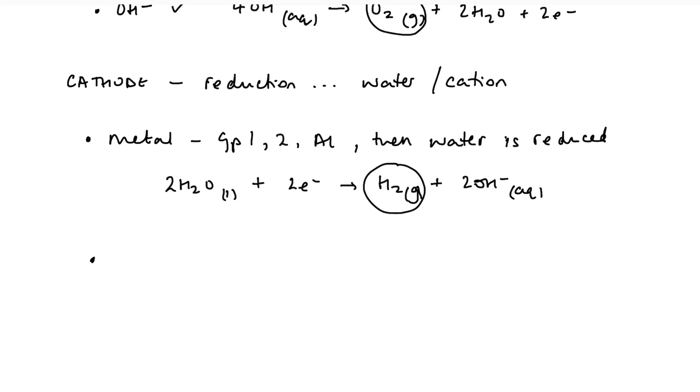If it's another metal, so it's not from group one, it's not from group two, it's not aluminium, then the metal ion is reduced, and it's deposited on the cathode. So the classic example there is copper. So these are less reactive metals, generally speaking, although it's not quite that clear cut.